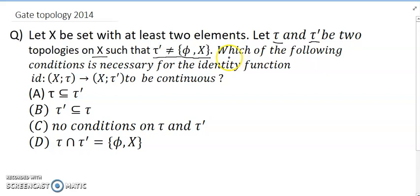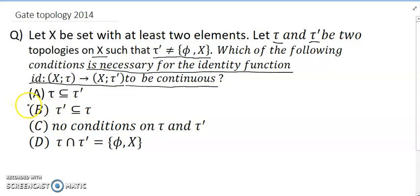Which of the following conditions is necessary for the identity map id: (X, tau) → (X, tau') to be continuous? The correct option is tau' ⊆ tau. Option B is correct; the other options are not correct.